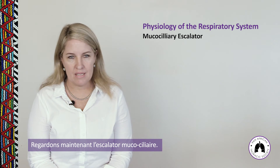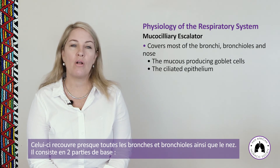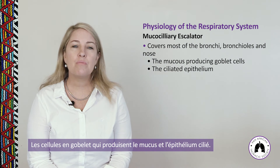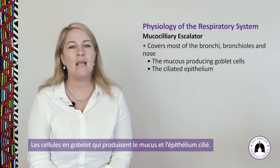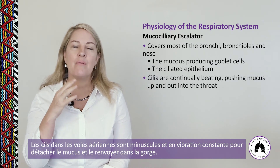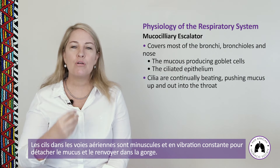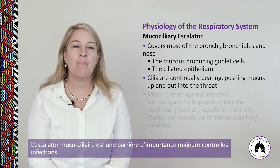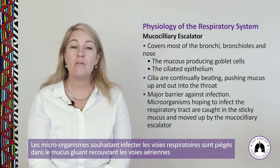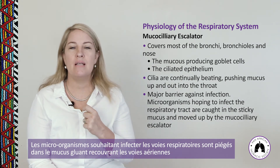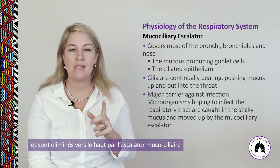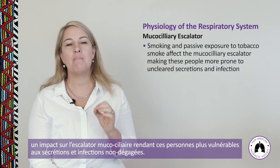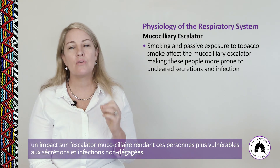The mucociliary escalator covers most of the bronchi, bronchioles, and nose. It is composed of two basic parts: mucus-producing goblet cells and ciliated epithelium. The cilia are tiny hairs in the airways that continually beat, pushing mucus up and out into the throat. The mucociliary escalator is a major barrier against infection — microorganisms are caught in sticky mucus and moved up by the escalator. Smoking and passive exposure to tobacco smoke can impair it, making people more prone to uncleared secretions and infection.